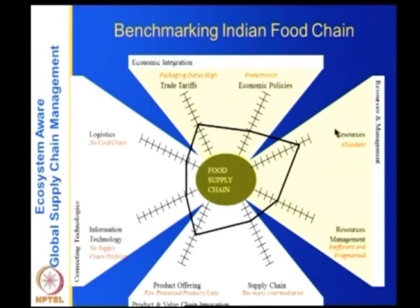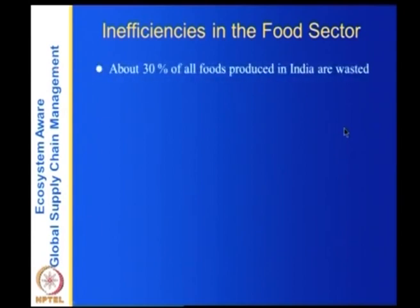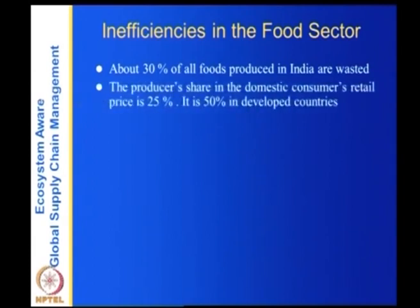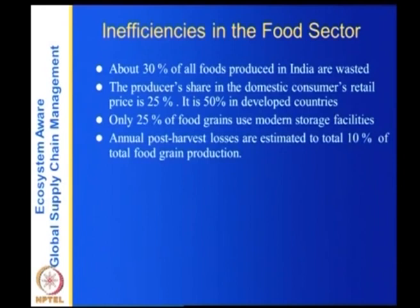Looking at the performance of the Indian supply chain: about 30% of all food produced in India is wasted. The producer's share of the domestic consumer retail price is only 25% — in the domestic market, 75% goes to intermediaries, logistics, and retailers. Only 25% of food grains use modern storage facilities. Annual post-harvest losses are estimated at 10% of total food grain production.